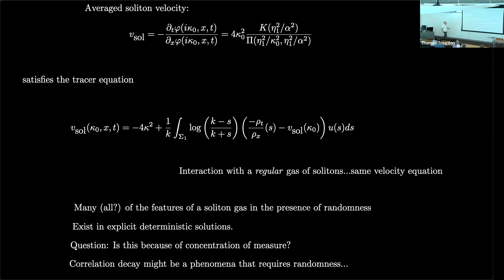In closing: many, if not all, of the features of a soliton gas in the presence of randomness that people observe numerically exist in explicit deterministic solutions — no randomness, very regular initial conditions. Is this because of a concentration of measure? I think it must be, but an analysis of that is perhaps the place where it connects to some of the topics of this conference. If we study the correlation decay of the field, that's going to have phenomena not present in the deterministic situation — that's my guess. Thank you.